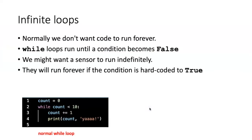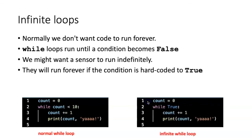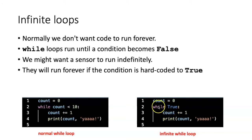Sometimes, if we want a sensor to run indefinitely, we can accomplish this by hard-coding the condition to true. So instead of checking whether count is less than 10, we simply hard-code the value to true. This means the code in the indented code block will continue executing forever.